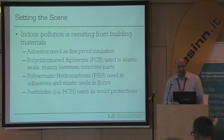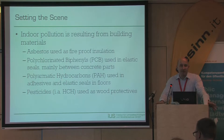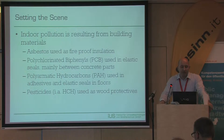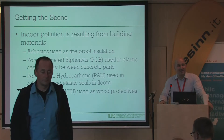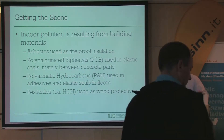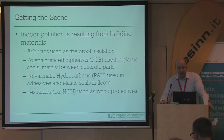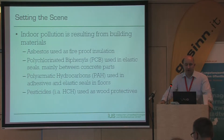What are we talking about? Pollution resulting from building materials — the most prominent one is asbestos, which was used in the 1970s and 80s as fireproofing and insulation. Polychlorinated biphenyls (PCBs) have been used in elastic materials, especially in seals between concrete parts. If you see buildings made up of large concrete parts — and you can see a lot of these in Vienna — it's very likely that there is PCB in those seals, because the concrete parts must be able to move. There are also examples of polyaromatic hydrocarbons (PAHs).